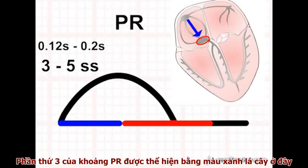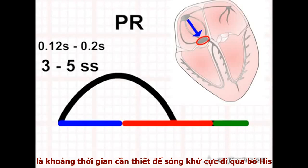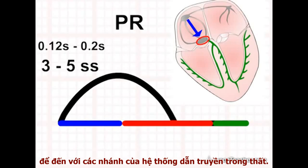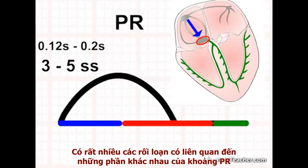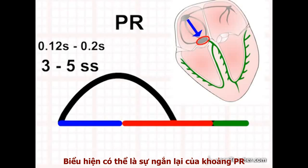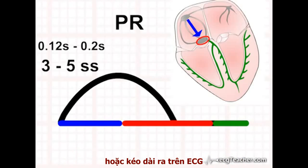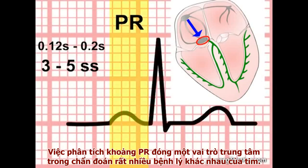The third contributor to the interval is the time taken by the depolarisation wave to transit through the bundle of HIS and the branches of the intraventricular conducting system. Many important disorders are associated with alterations in different components of the PR interval, manifesting as abnormal shortening or prolongation on the ECG. Analysis of the PR interval plays a central role in diagnosing many different disorders of the heart.